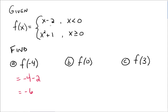You do not take negative 4 and plug it into both parts of the function, get negative 6 on the top and 17 on the bottom, and say the instructor will choose the right one. No, that's not how it works. Make sure that you use the proper piece of the function that you need to.